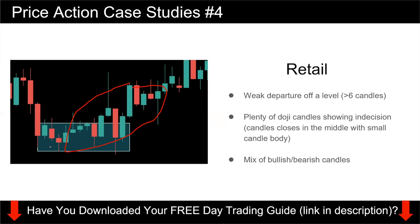There's very weak departure. You also see a lot of dojis — a series of dojis and a hangman — showing a lot of indecision, with price closing at the center of the candle body. You also see a good mix of bullish and bearish candles: a lot of green and a lot of red candles. So this is clearly a retail buying. You want to avoid buying into this kind of level.